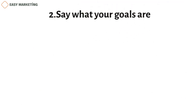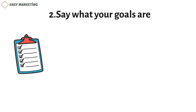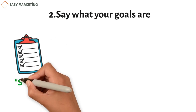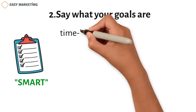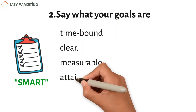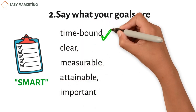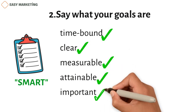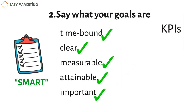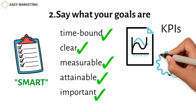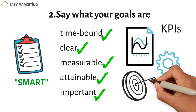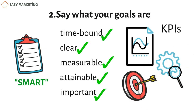Step 2: state what your goals are. Next, you can set performance goals based on how well you are doing now. Think of SMART goals as goals that are time-bound, clear, measurable, attainable, and important. Using the KPIs of the company or department, you can use data to figure out what outcomes to track and how to adjust them. You can look at the company's goals and figure out how you can help reach financial goals as well as marketing goals.